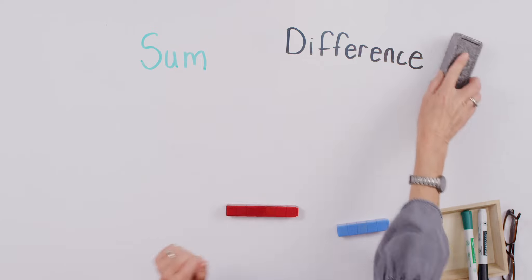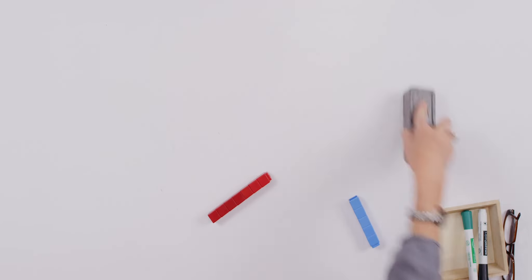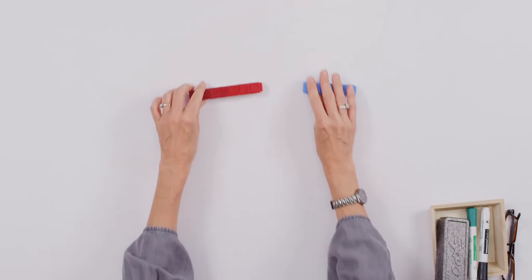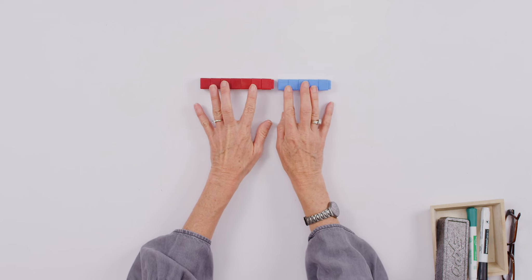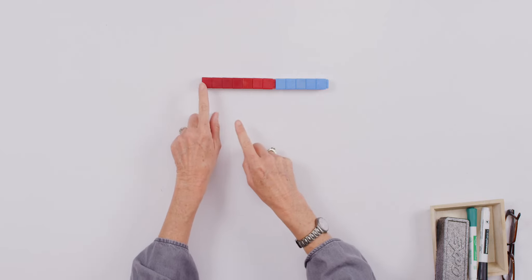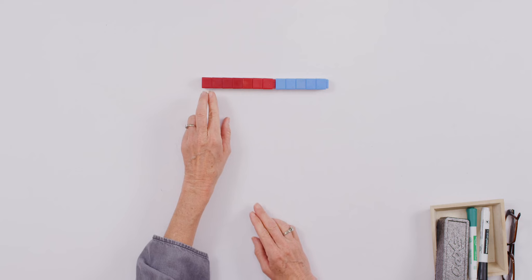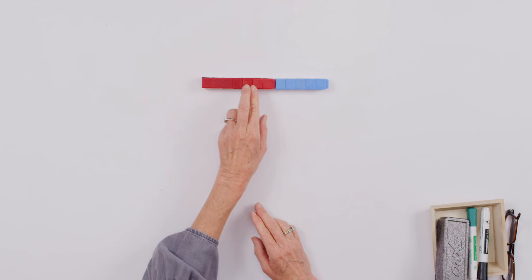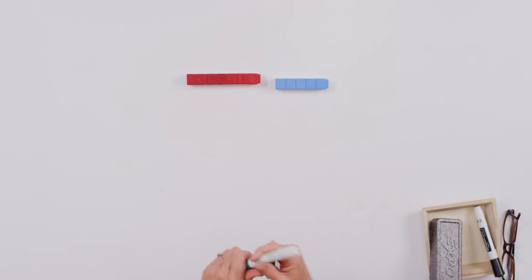Alright, so sum and difference, that's what we're concentrating on today. So how about, like I was showing you, I put my cubes together like this. Let's take a look and see what equation we need to write. I'm going to count by twos. Sometimes we can count by ones, but how do we count by twos? Two, four, six, and one more is seven. So we have seven on this side.